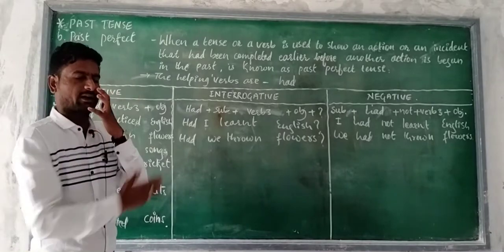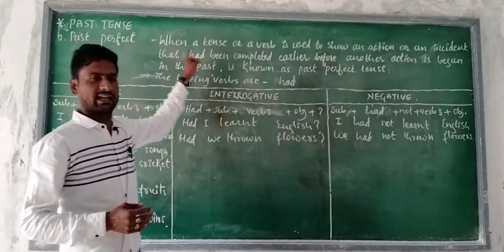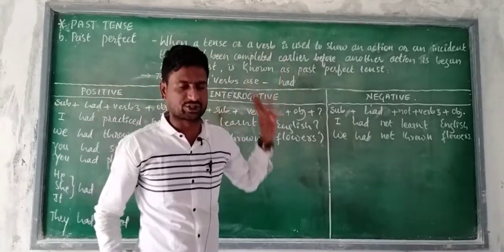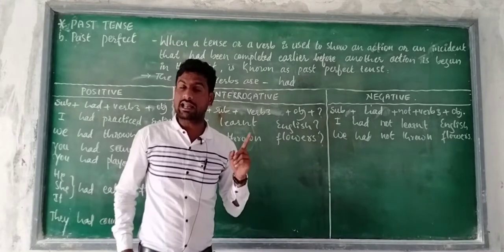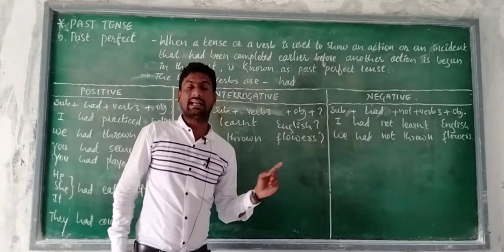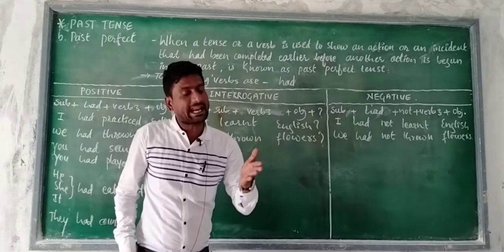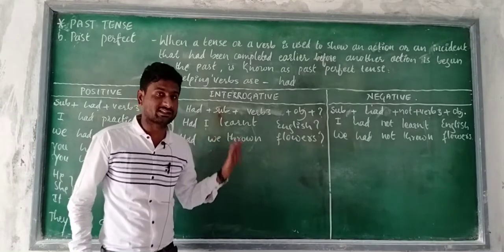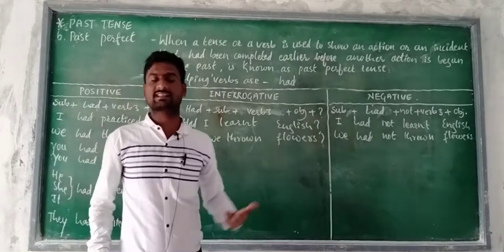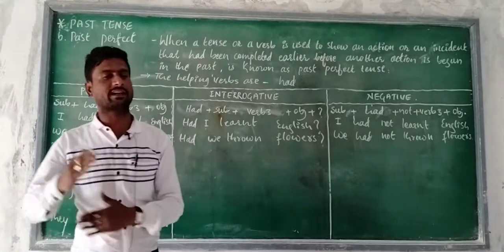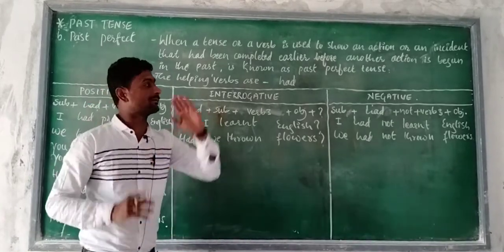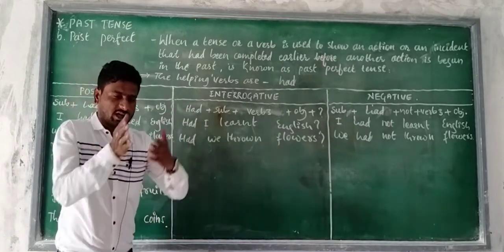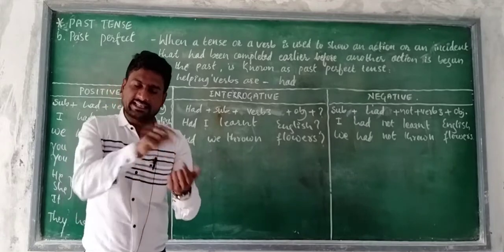Please look at the board. When a tense or a verb is used to show an action or an incident that had been completed, that had been finished, that had been ended earlier before another action within the past — that is known as Past Perfect tense.